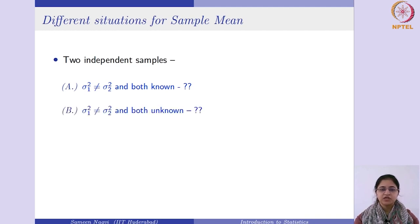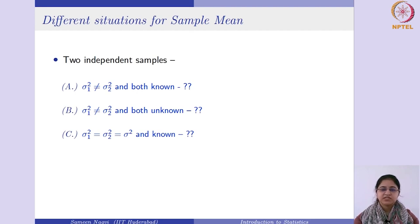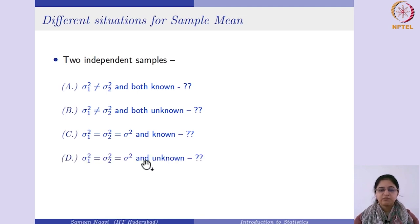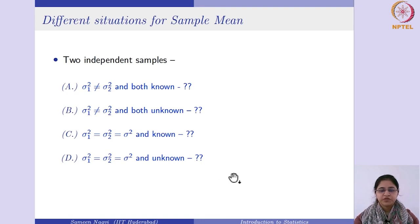Next can be that they are unequal but unknown. Likewise, they can be equal — the two population variances are the same as sigma square and they are known. And lastly, you can have them equal but unknown. The unknown situations are the more practical scenarios. Cases B and D are the more practical situations we encounter. We will also see how to deal with dependent samples.